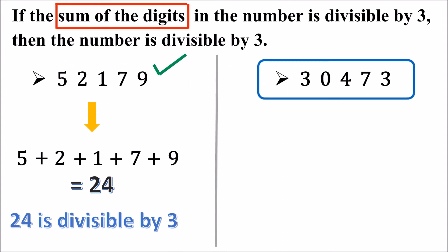Is this number divisible by 3? To know whether it is divisible by 3 or not, we need to add all the digits of this number. The digits of this number are 3, 0, 4, 7, and 3.